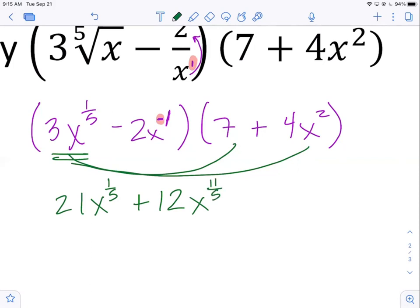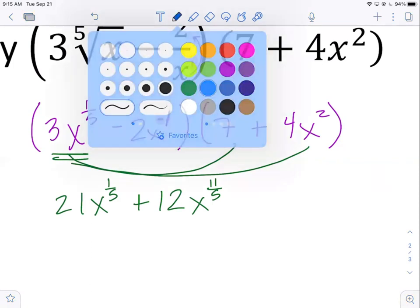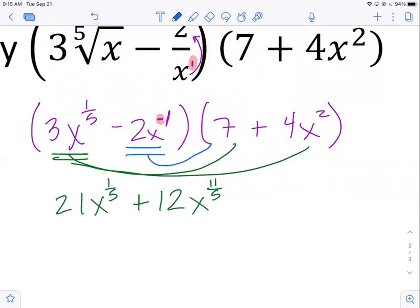We exhaust the first term all the way through each term in the second factor. Then we switch to the next term and we do the same thing. We distribute it. So we get negative 14 X to the negative first, and now we get negative eight X to the two plus negative one is one. And again, if that second factor had more terms, we would just keep distributing it. If your first factor had another term, then we would just go to the next term and distribute it. So foil only works with two by two, but distributing in this manner works now with any number of terms times any number of terms. Just start with the first, distribute all the way through. Next term, all the way through. Next term, all the way through.